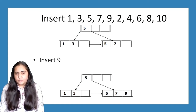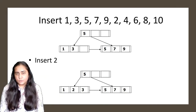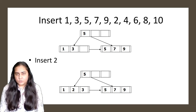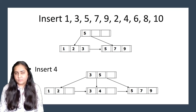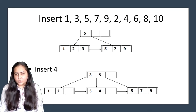Next I insert 9 — simply placed next to 7. Then I insert 2, which goes to the left of 5 next to 1, and there is space. Then I insert 4. The left side of 5 is already full with 1, 2, and 3, so one key must go to the top level. Following the same rule of picking the right-side node, 3 goes to the top, and the leaf nodes are readjusted below.